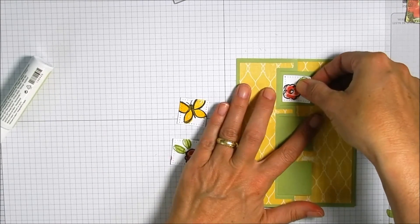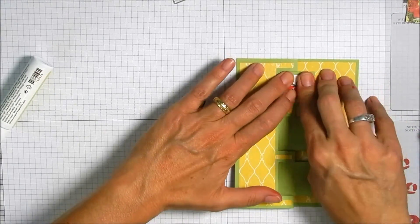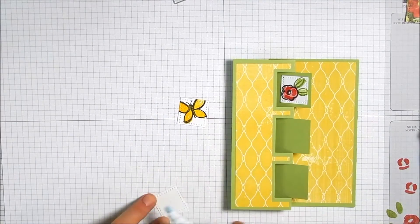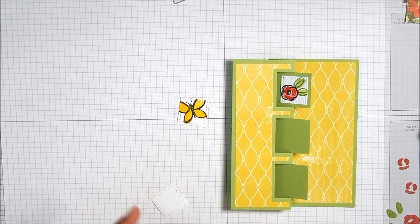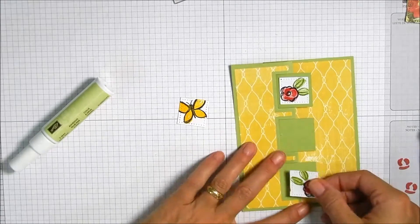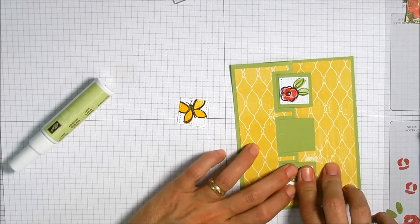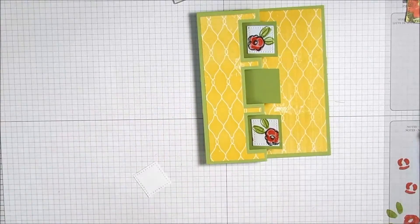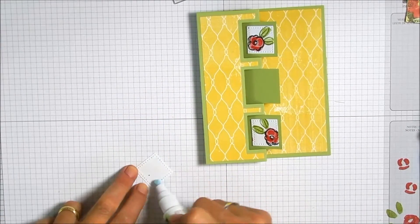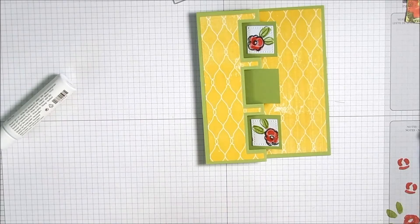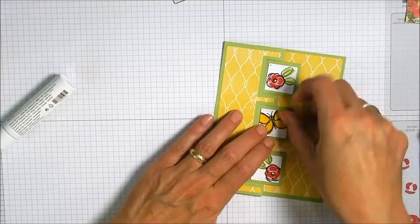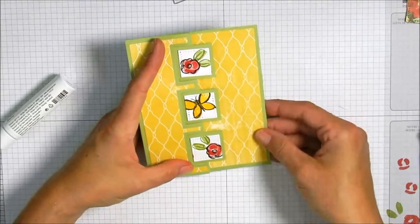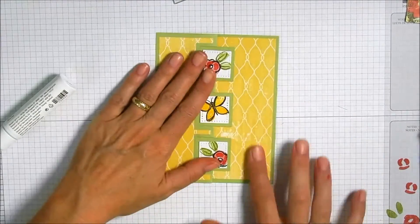I am going to adhere these again with the two-way glue pen. It might have been cute making this again in the future, I'm probably going to use a little bit of fun foam or maybe even just a single dimensional on the back of those just to kind of pop them up. I don't think they're big enough that they would cause any problem with the mechanism of the Flip It card at all.